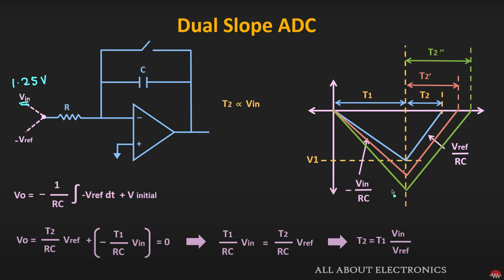For this finite time, based on the input signal, we get some slope — if the input voltage is higher, the slope will also be higher. The fixed integration time T1 is equal to 100 milliseconds. After this 100 milliseconds, the switch gets connected to the reference voltage, which is minus 5 volts. Since it is a negative voltage, the slope is in the opposite direction, and the signal integrates until the output voltage becomes zero. That time corresponds to T2.